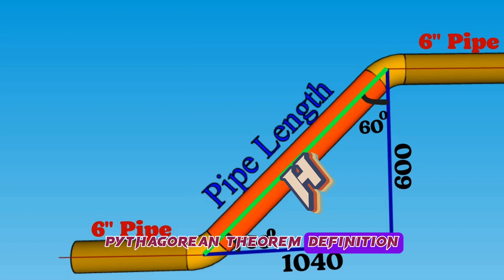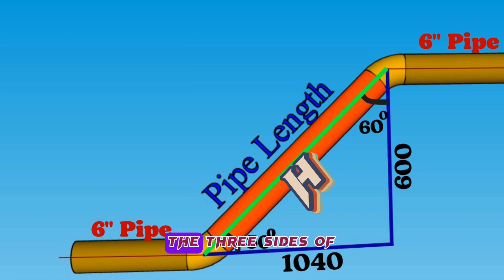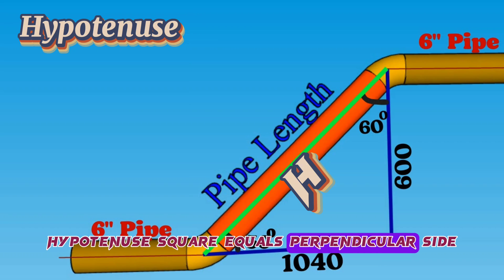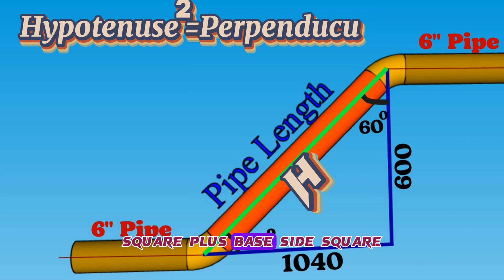Pythagorean theorem definition shows the relationship between the three sides of a right-angle triangle. The square of the hypotenuse is equal to the sum of the squares of the other two sides. Hypotenuse square equals perpendicular side square plus base side square.